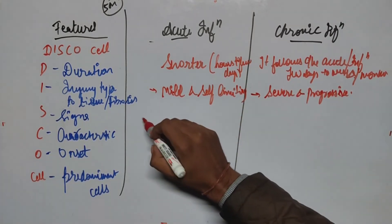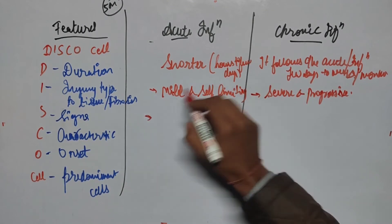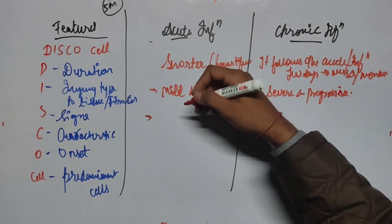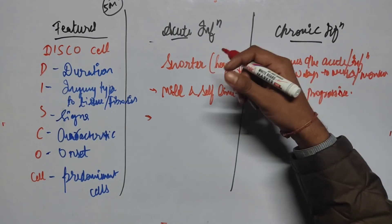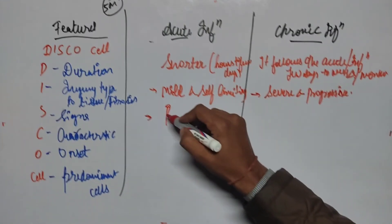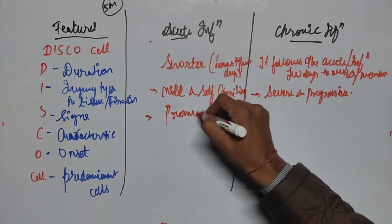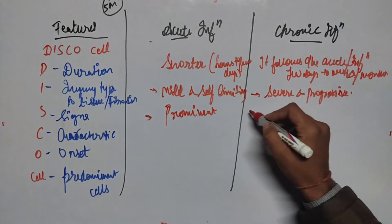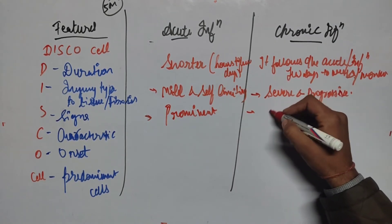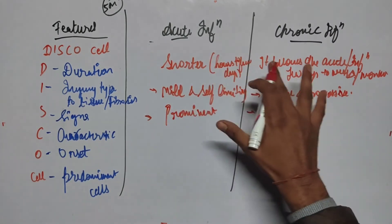Looking at Signs: in acute inflammation, signs are very prominent — you'll see redness, swelling, and a little edema at the site of injury. In chronic inflammation, signs are less prominent.